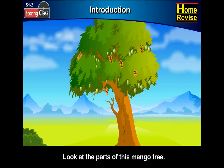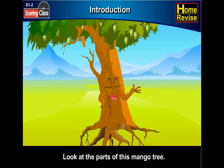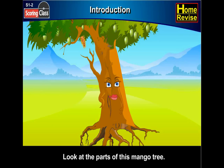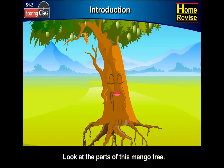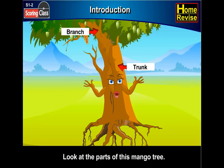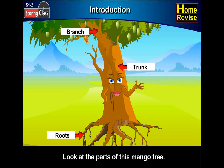Look at the parts of this mango tree. Hello, I am a mango tree. Let me tell you about myself. This is a leaf. This is my fruit. These are flowers. This is my branch. This is my trunk. These are roots. So do you know me by now?